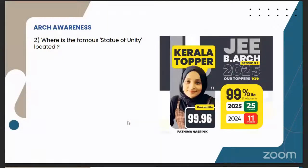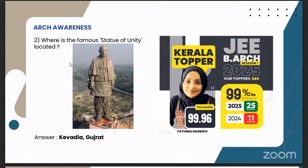Where is the famous Statue of Unity located? That was a tricky question because we all know the Statue of Unity is situated in Gujarat, but most students will be unaware of the exact location. The Statue of Unity is in Kevadia, Gujarat — it's in Kevadia. That city name was specifically asked in this exam. It is the statue of Sardar Vallabhbhai Patel situated in Gujarat, and it is also the tallest statue in the world.